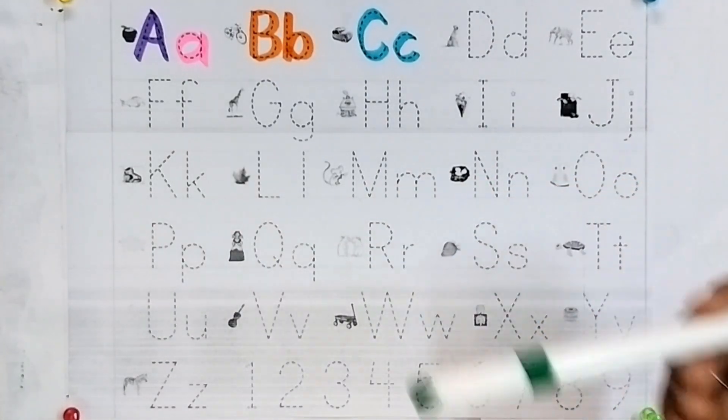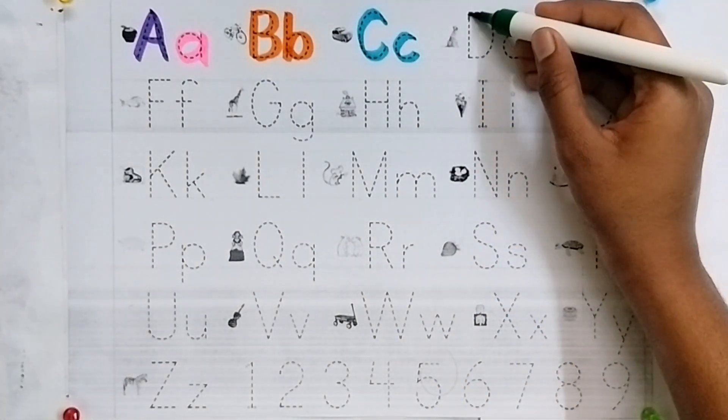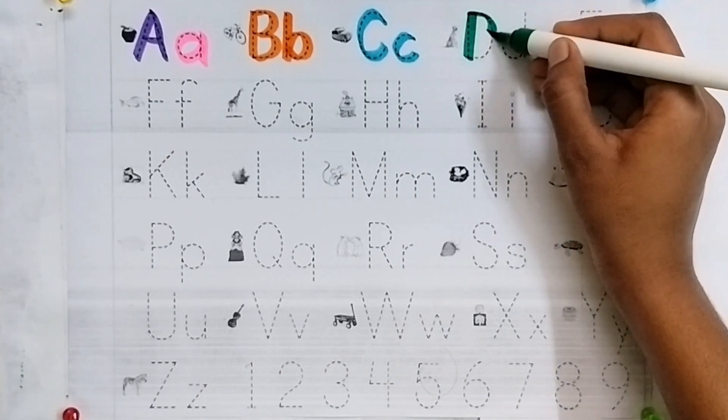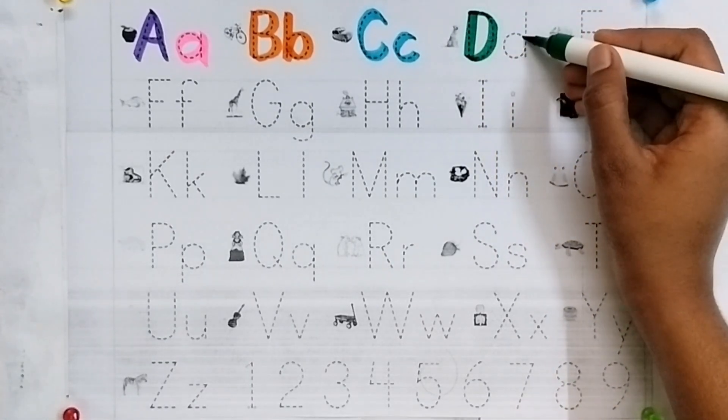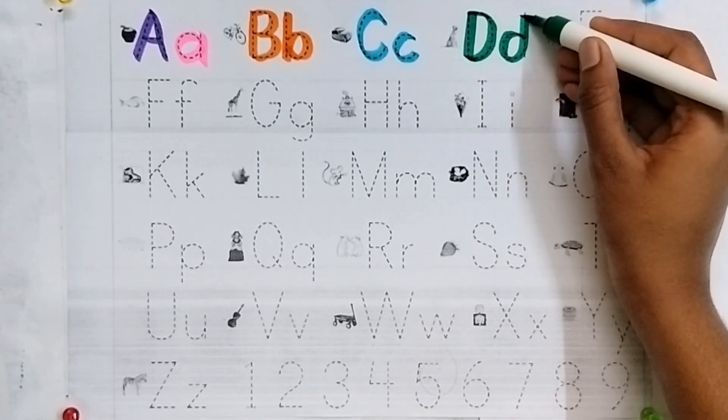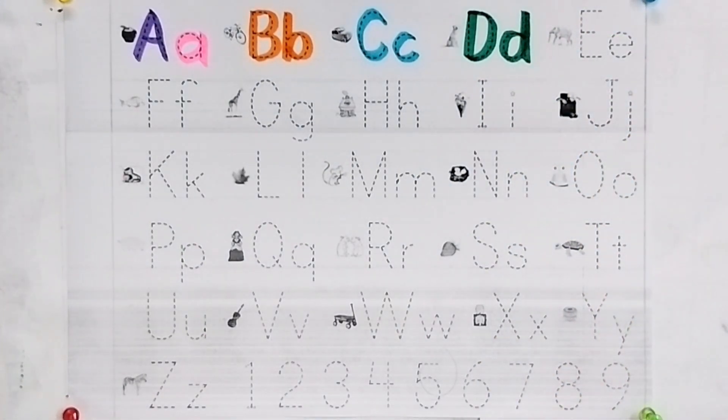Dark green color. D. D for dog. Small d. D for donkey. D for donkey.